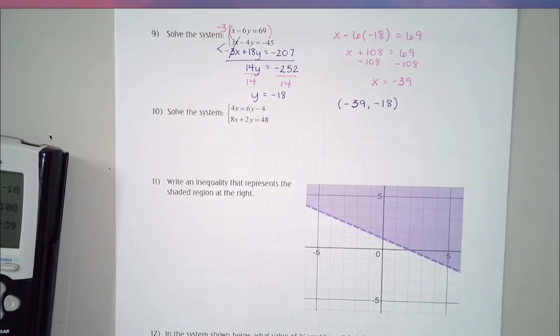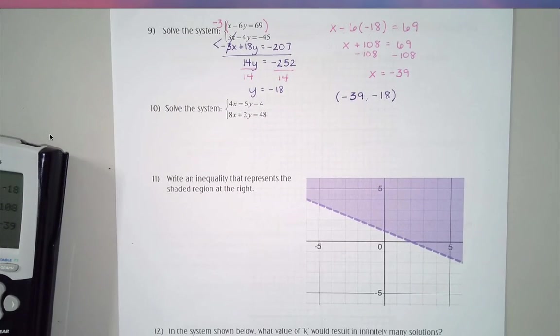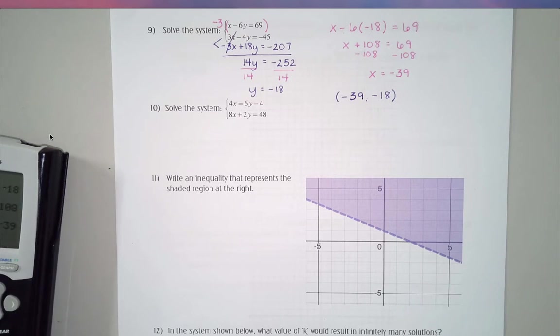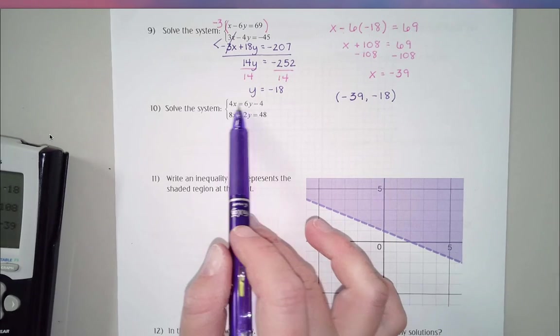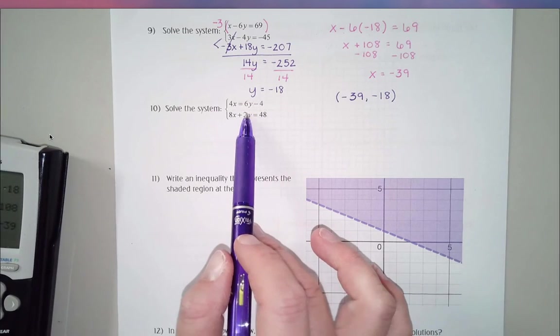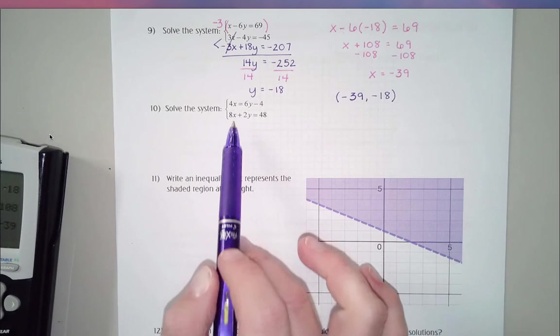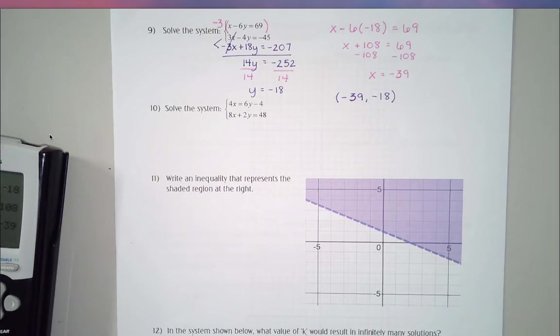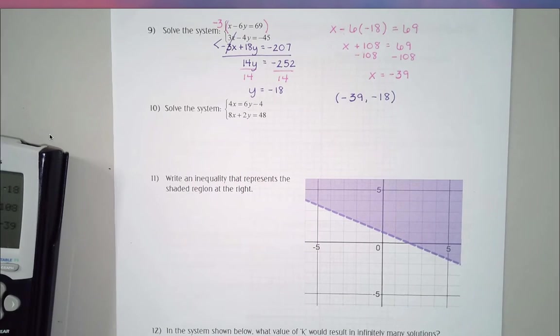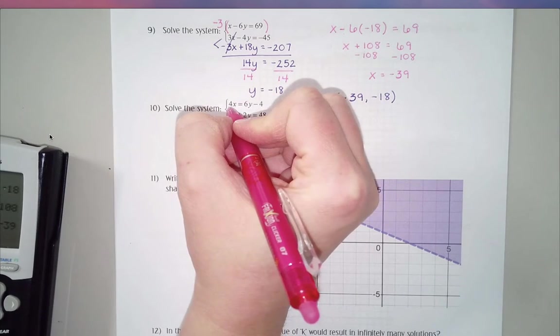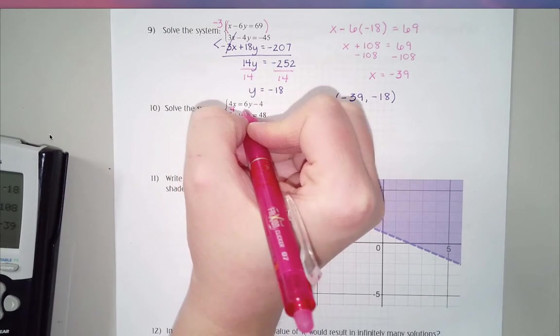Now looking at number 10, I might choose differently. There is a way I could do this with elimination, but do you notice how this y is over on the right side of the equals sign? I would need to fix that before I did elimination here. So I'm going to choose to do this one with substitution.